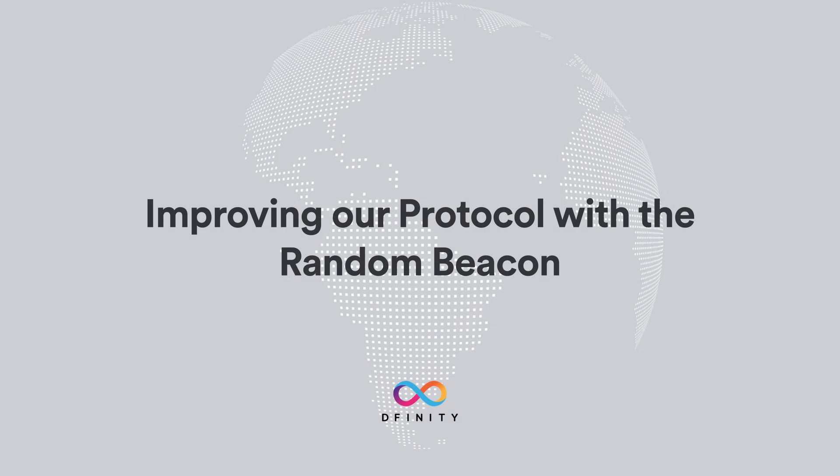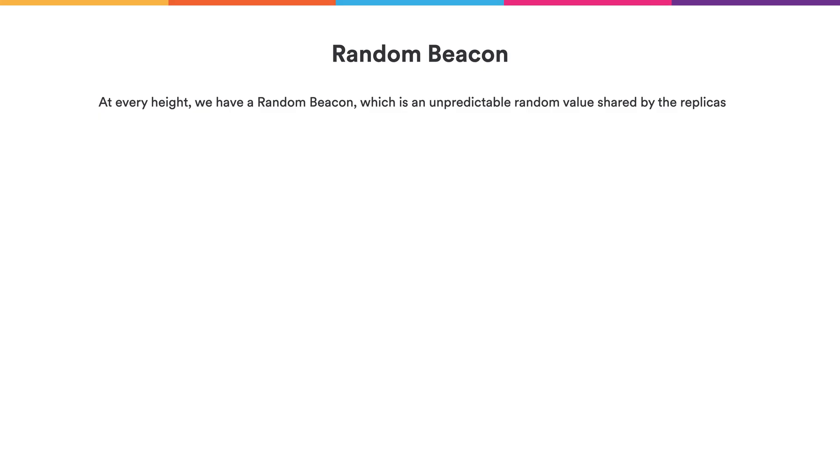We want to finally achieve agreement on the blockchain, so we're going to add things to our protocol to reduce the amount of notarized blocks we get every round. We're going to introduce the random beacon. The random beacon is a random value shared by the replicas of the subnet, which we will use to further enhance the protocol.